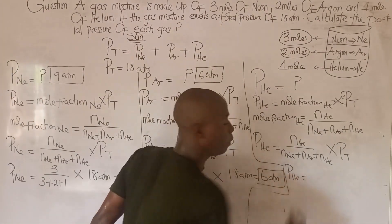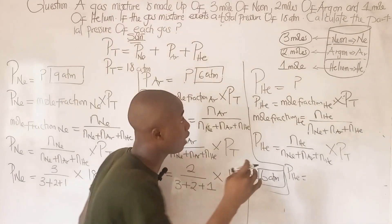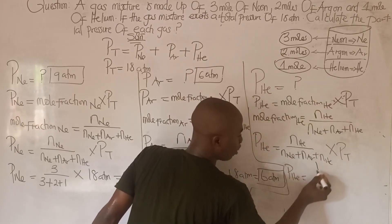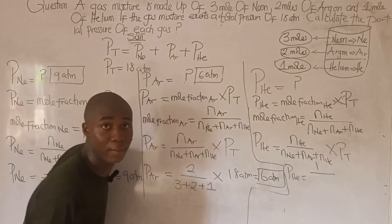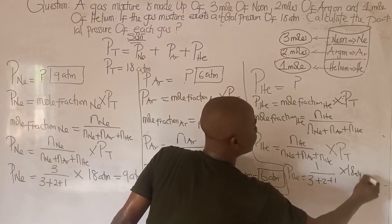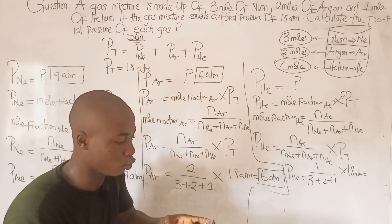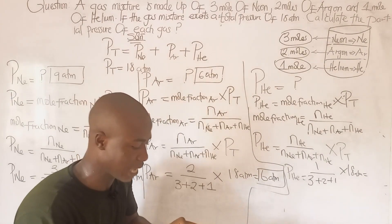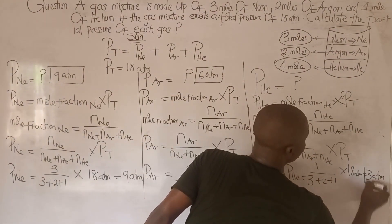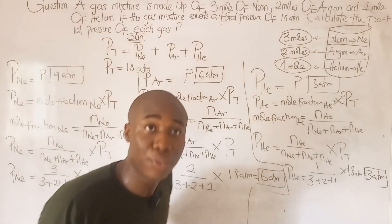Solving: 1 over 6 times 18 gives 3. So the partial pressure of Helium is 3 atm.